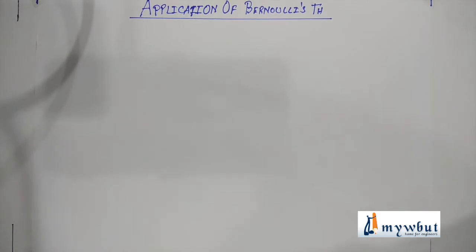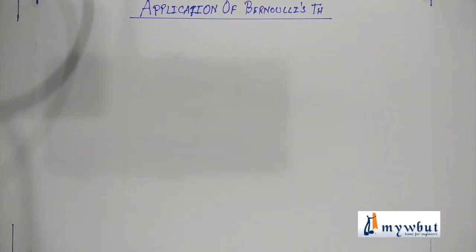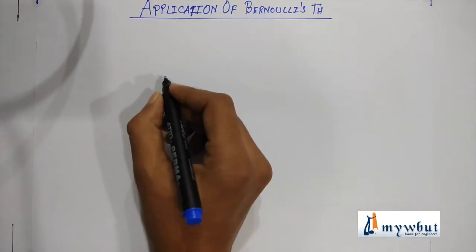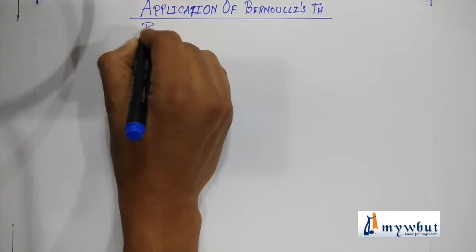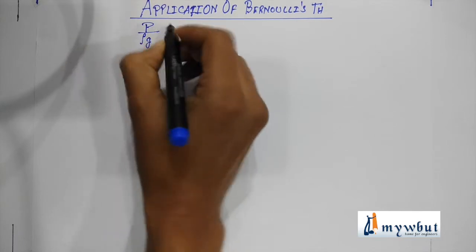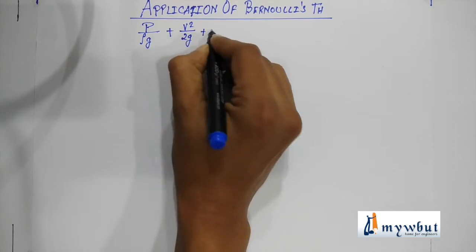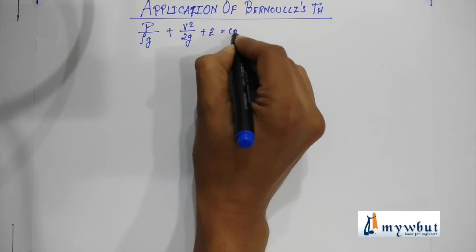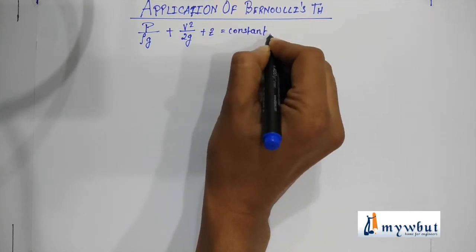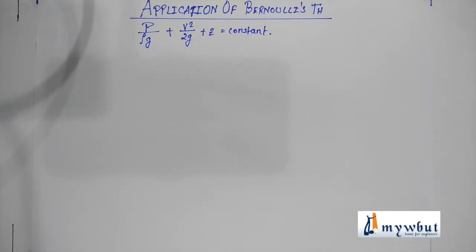Hello friends, in the previous video we have derived the Bernoulli's equation from the Euler's equation, and in this video we are going to see the application of Bernoulli's theorem. So let us just revise what was the Bernoulli's theorem: it was p by rho g plus v square by 2g plus z is equal to constant.